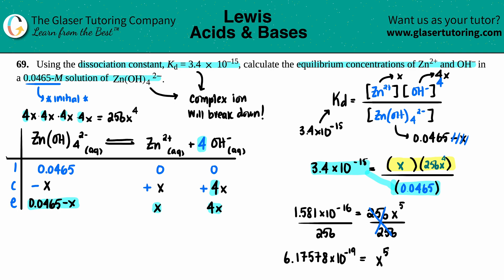Since we have x to the fifth power, we need to take the fifth root. On the calculator, raise the value to the power of 1/5. So x equals (6.175×10⁻¹⁹) raised to the 1/5 power, which gives x equals 2.28×10⁻⁴.